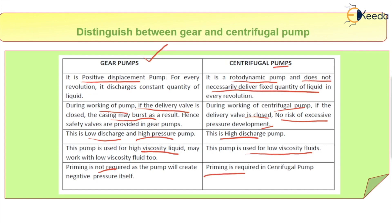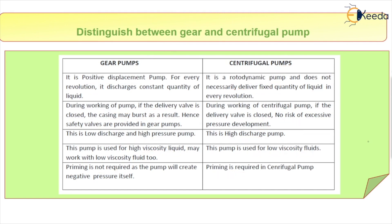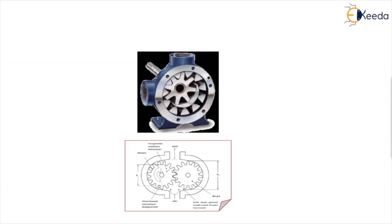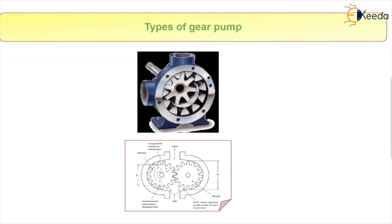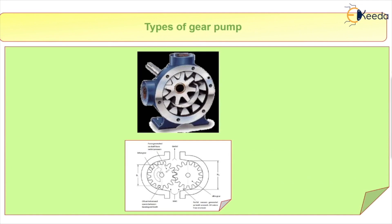These are the main parameters that distinguish between a centrifugal pump and a gear pump. In this video, we will first cover the gear pump and then the centrifugal pump. As you can see, there are two types of gear pump: the internal gear pump and the external gear pump.